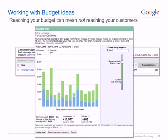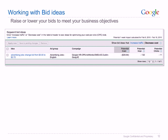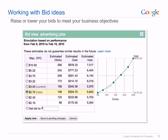Now let's look at the last idea type: bid ideas. Keyword bid ideas are based on bid simulator data. You'll see bid ideas in your account if we determine that you can receive additional clicks without a large increase in cost, or save money without sacrificing a lot of clicks. To get started, choose whether you want to increase traffic or reduce costs — you can find these options at the top right of your bid ideas. Depending on which you choose, you'll see estimates of how bid changes might affect your costs, impressions and clicks. For example, by decreasing costs, I get 12 fewer clicks but save around $36.